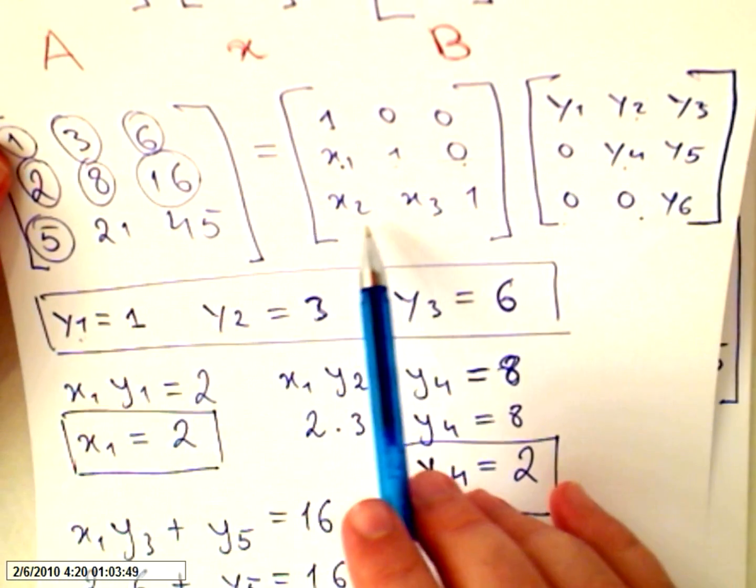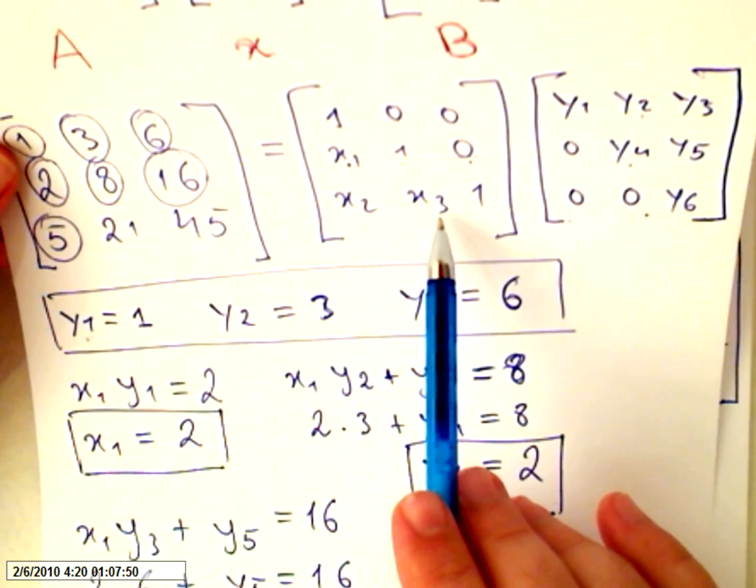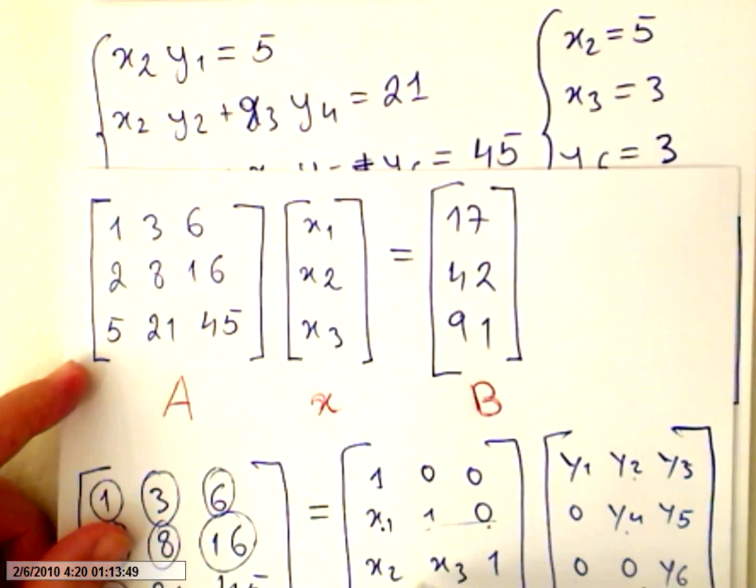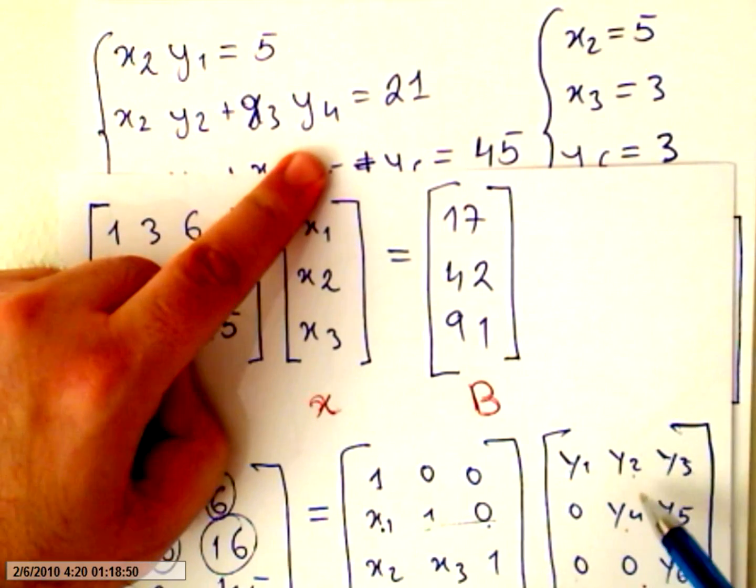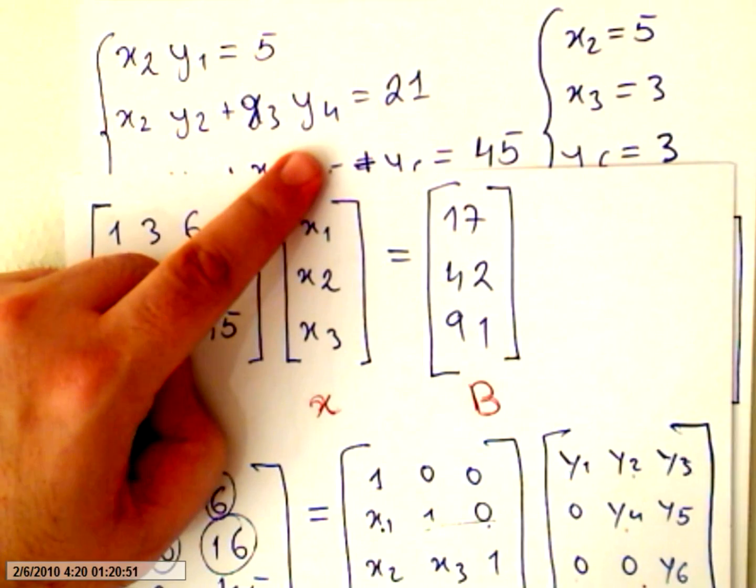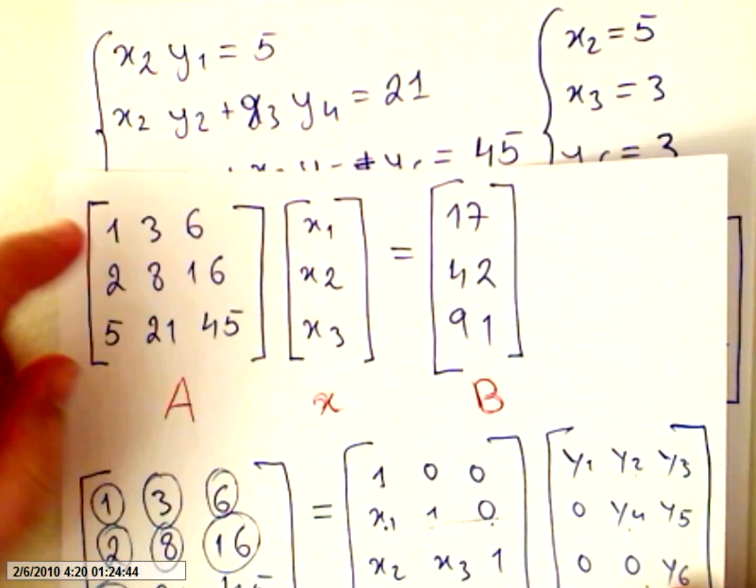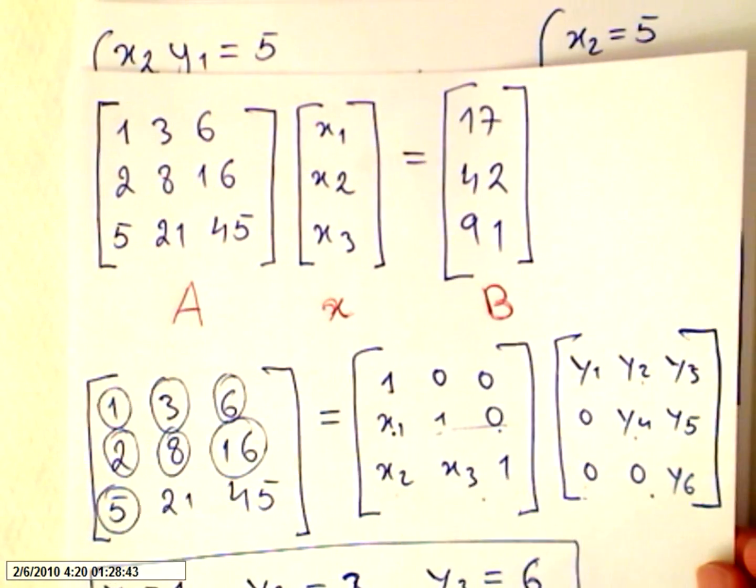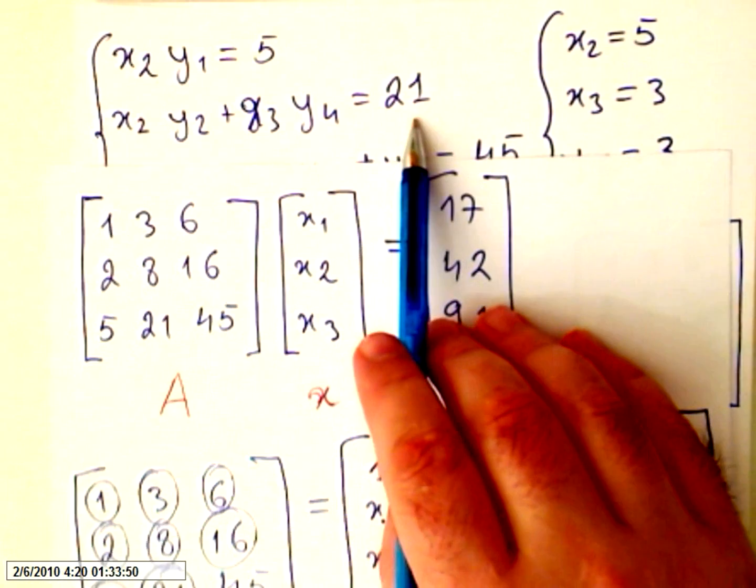Now here it will be x2 times y2 and x3 times y4 and 1 times 0. So the last value does not count, and it has to be equal to 21.